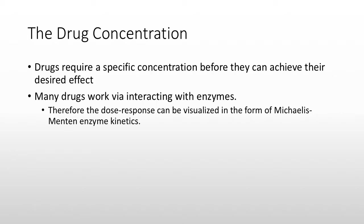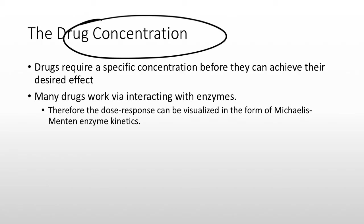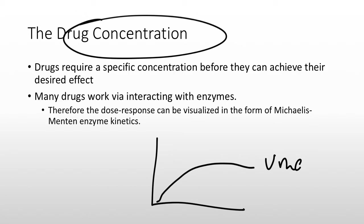Once you absorb a drug, that's when it starts having its activity. Its concentration is what's going to determine its effect. Most drugs interact with some kind of enzyme or receptor, and because they interact with an enzyme or receptor, their activity can be mapped as a Michaelis-Menten curve. You get some sort of maximum velocity at that enzyme — if you have the maximum velocity, that means your drug concentration is as high as it could be, and getting it any higher would not have any additional activity. Your drug concentration is what's going to determine its effect.